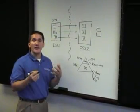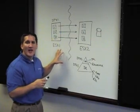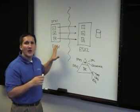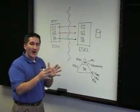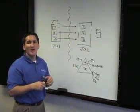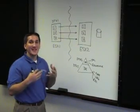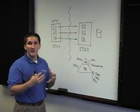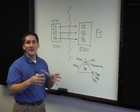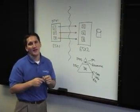I want to wrap things up in this whiteboard session by talking a little bit about how to position Double Take for VMware Infrastructure against or with what is provided as part of the VMware Virtual Infrastructure offering. VMware Virtual Infrastructure includes things like vMotion, storage vMotion, distributed resource scheduling, some really cool features that are part of the VMware ESX platform.